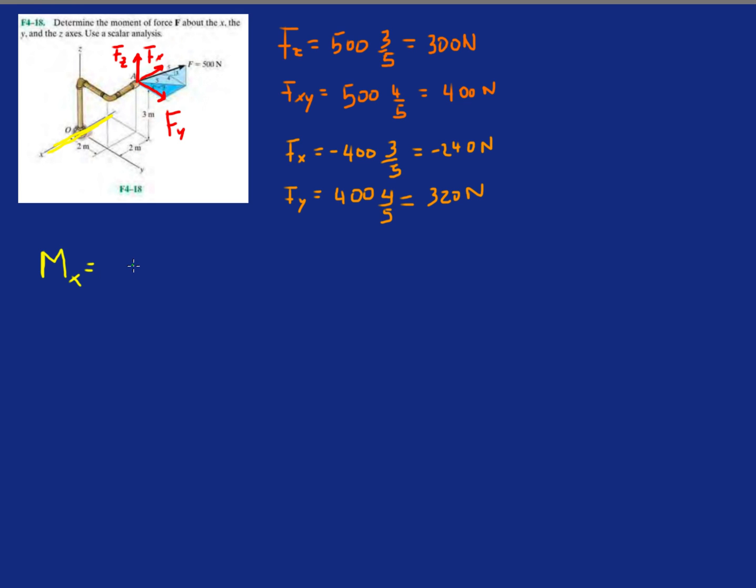So first, we know it's going to be FZ. FZ, we have to shift it this distance in green. If you extend the line of action on FZ all the way down, we have to shift it a distance of two meters so it intersects the x-axis.